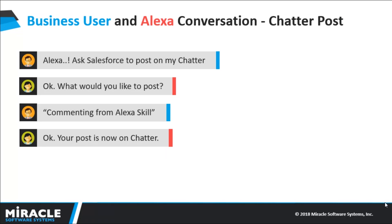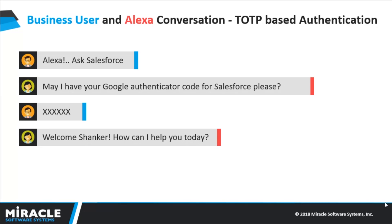In this slide, I will describe how to post on Chatter. Chatter is an enterprise collaboration platform on Salesforce. The user can ask Alexa to make announcements or notifications which will be visible to all colleagues or members of your group. I will also address compliance and security issues in using Alexa in a public setup to make business collaboration.